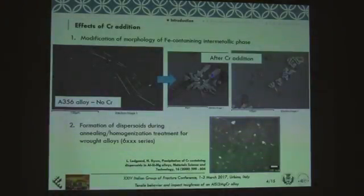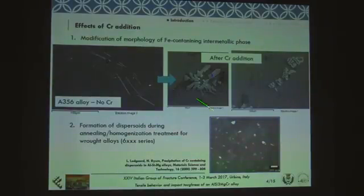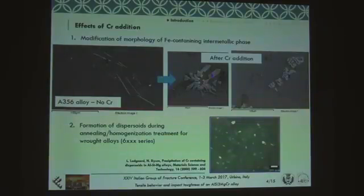That's why chromium is inside this alloy. The first effect of chromium addition is the modification of the morphology of the iron-containing intermetallic particles, which usually present a needle-like morphology. Due to the presence of chromium, we can have very different morphologies. These are just representative images to give an idea of how much the shape of these particles can change due to chromium addition.